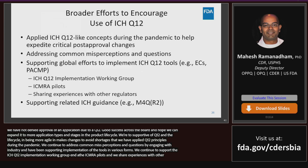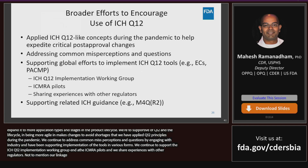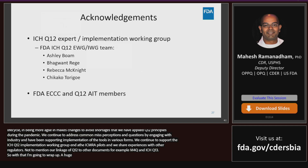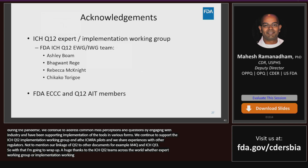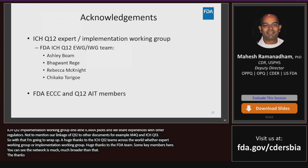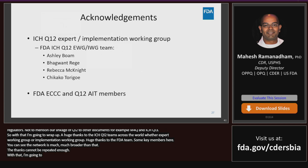We continue to support linkage of Q12 to other related ICH guidance documents — for example, E4Q and revision 2 — and looking ahead into ICH Q14 where we talk about analytical methods, and you can even see the DNA of Q12 in ICH Q13 when it comes to continuous manufacturing. With that, a huge thanks to the ICH Q12 teams across the world — whether the expert working group or the implementation working group — and huge thanks to the FDA ICH Q12 EWG and IWG teams and the much broader network of support teams, ECCC teams, and Q12 assessment teams. I'm happy to engage with you further. Thank you very much.